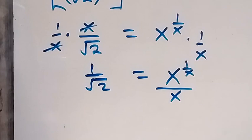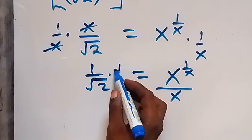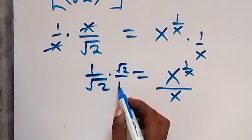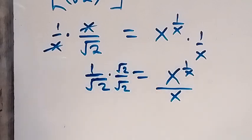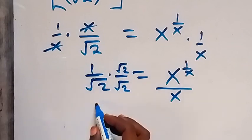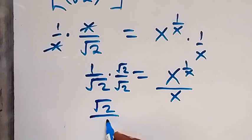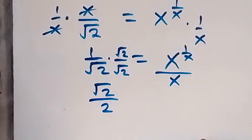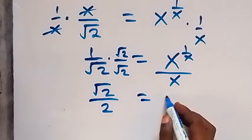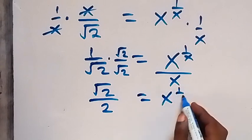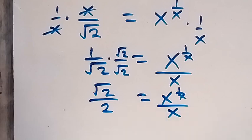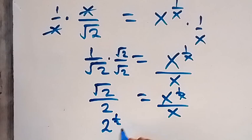We can rationalize 1 over root 2: multiplying top and bottom by root 2 gives root 2 over root 2 times root 2, which is root 2 over 2. Since the square root can be written as a power of one half, this is 2 raised to power one half, over 2.